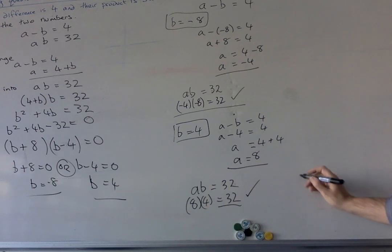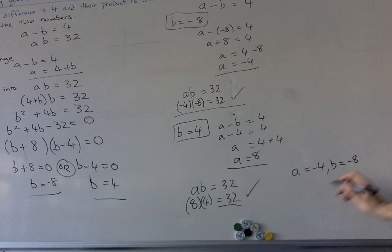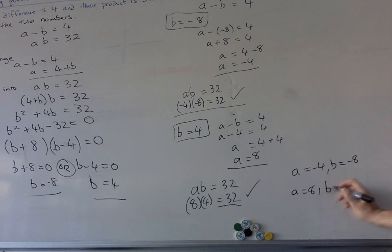So then our final solutions are: A equals minus 4, B equals minus 8. And we've also got A equals 8, and B will equal 4. So we have two sets of solutions.